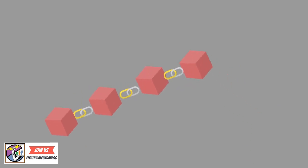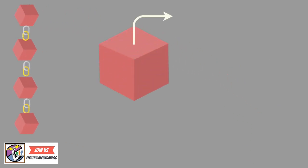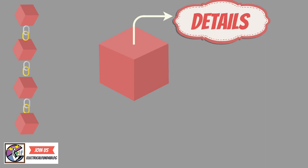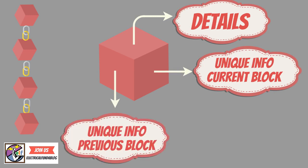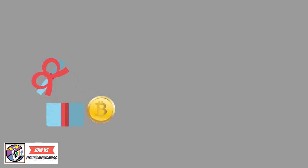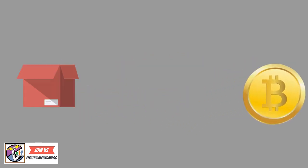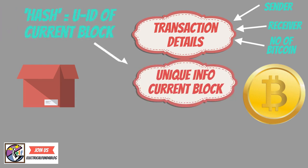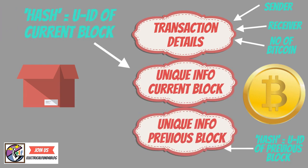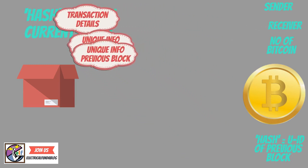Let's have a closer look at each block. It contains details about the transaction, unique information about this block, and unique information about the previous block. For a clear understanding, let us take a Bitcoin transaction. The transaction details contain the sender, receiver, and number of bitcoins. It also contains a hash — the unique ID of the current block — and the unique ID of the previous block. All this information is encrypted in a block.